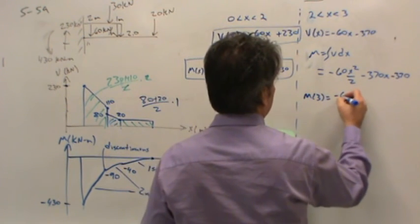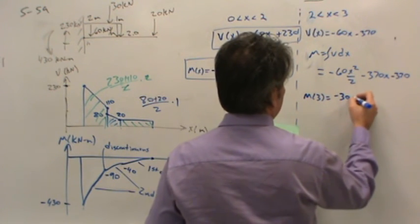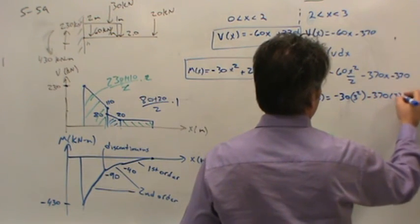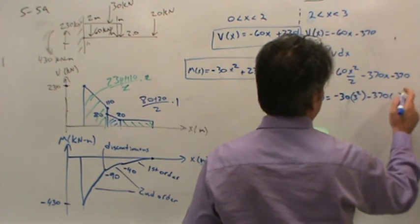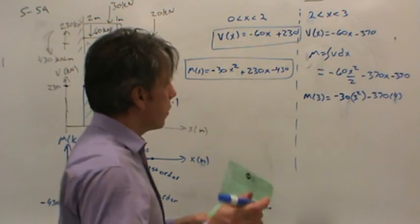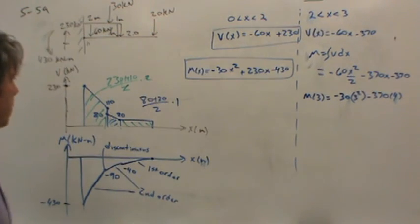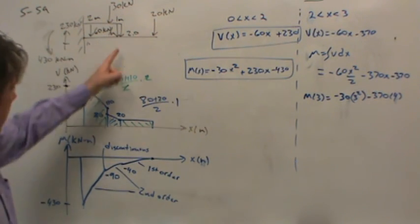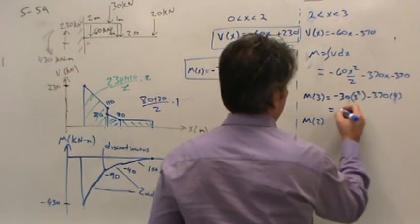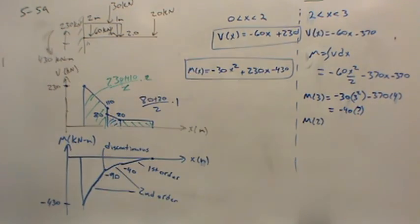Moment of 3 equals negative 30 times 3 squared, which is 27, minus 370 times 3. That's 370 times 4. I can't do this in my head and I don't have a calculator so you should pause the video at this point and try it and see what you get. But you should get at a moment or at a position of 3, you should get a moment of negative 40. You can verify the moment at 2. So this should be negative 40. Is it equal to that? Let's plug in x equal 2.